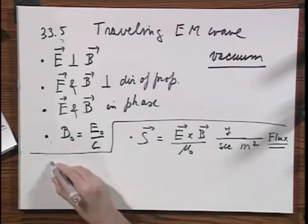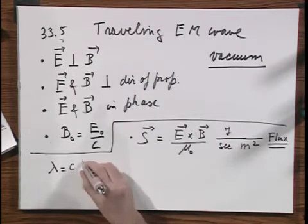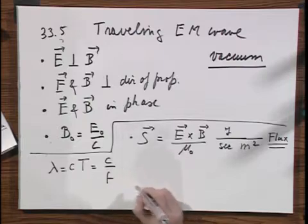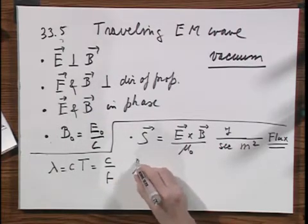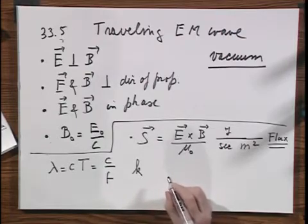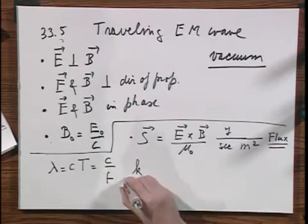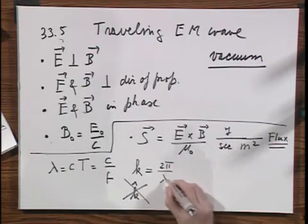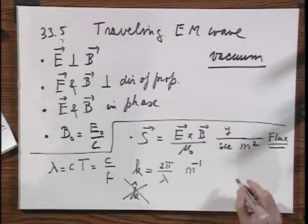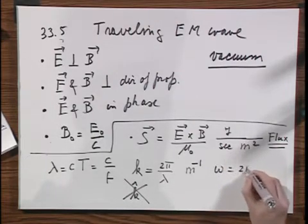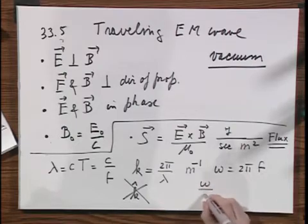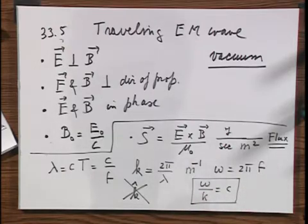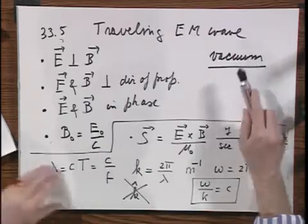What also always holds, lambda equals C times the period of one oscillation. Don't confuse this T with Tesla. So, this is also C divided by the frequency of the radiation F. What you will often see introduced is a wave number K, which has nothing to do with the unit vector in the Z direction. Nothing. That K equals two pi divided by lambda and that has as a unit one over meter. Now, since omega equals two pi times the frequency F, it follows immediately that omega divided by K also is the speed of light.